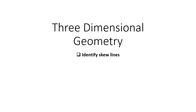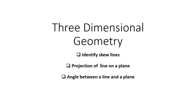Welcome to my second lesson, which is also the last lesson on three-dimensional geometry. In a previous lesson, I took you through the definitions of skew lines, a projection of a line on a plane, an angle between a line and a plane, and an angle between two planes. In this particular lesson, I want to take you through the application of these by trying out actual examples.